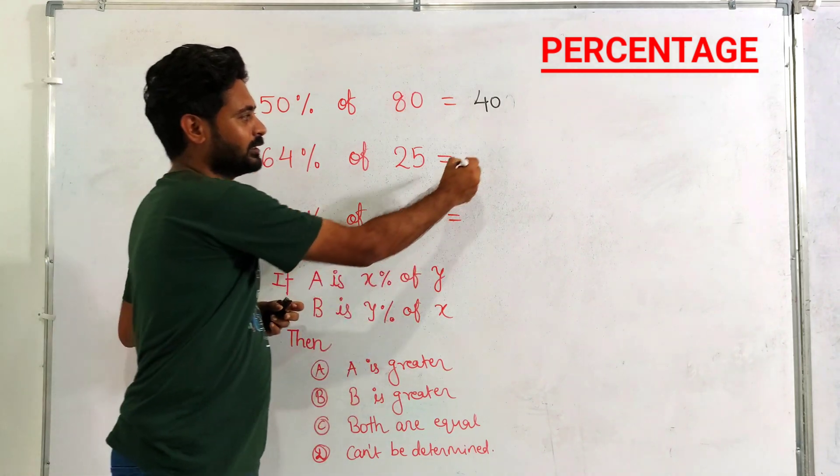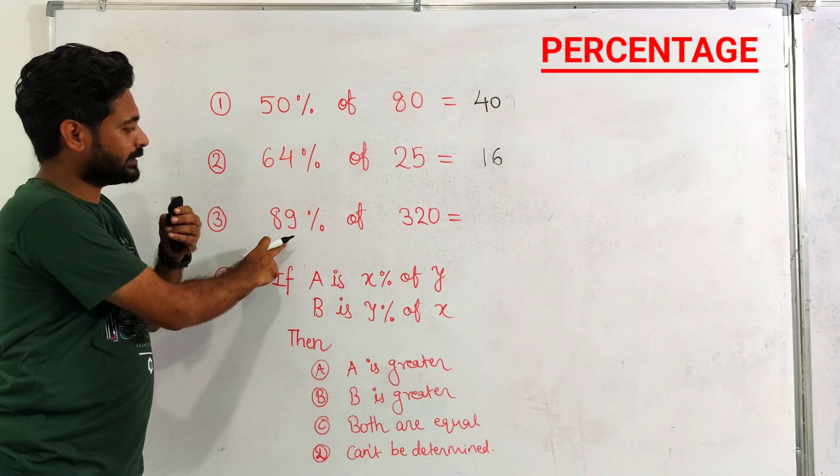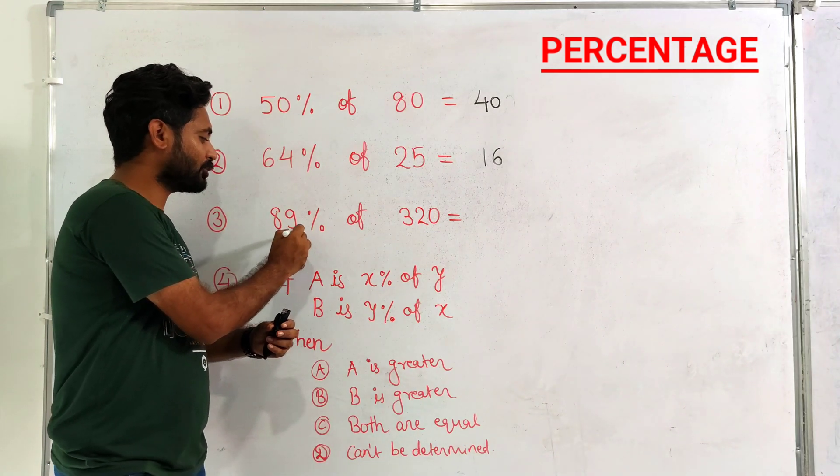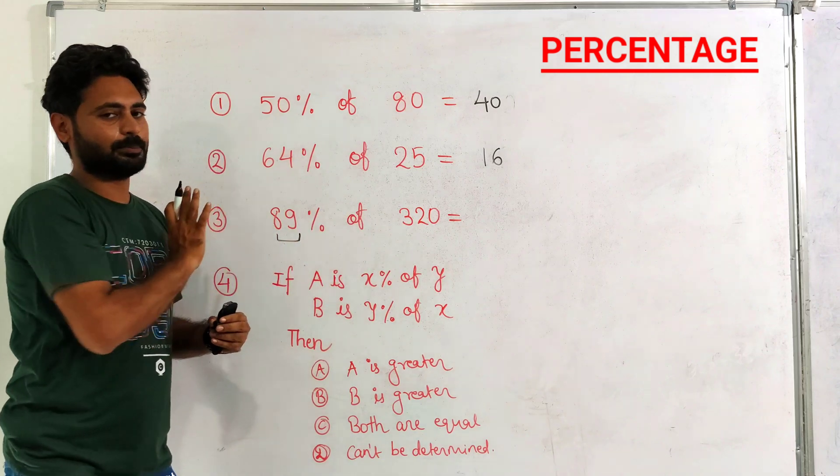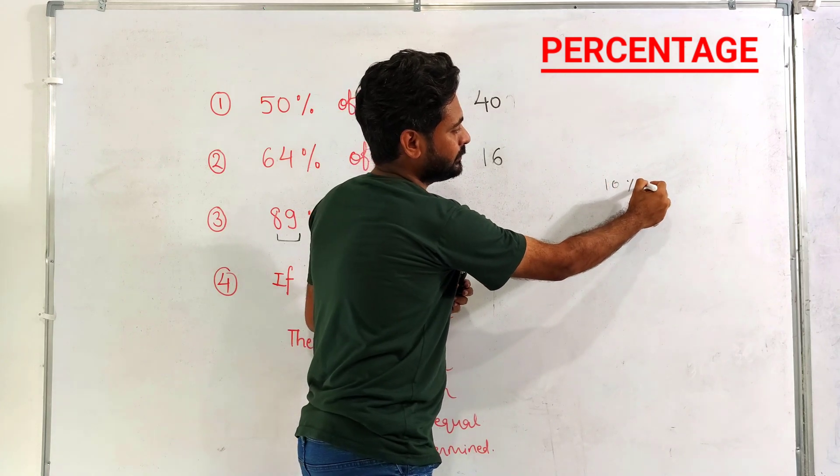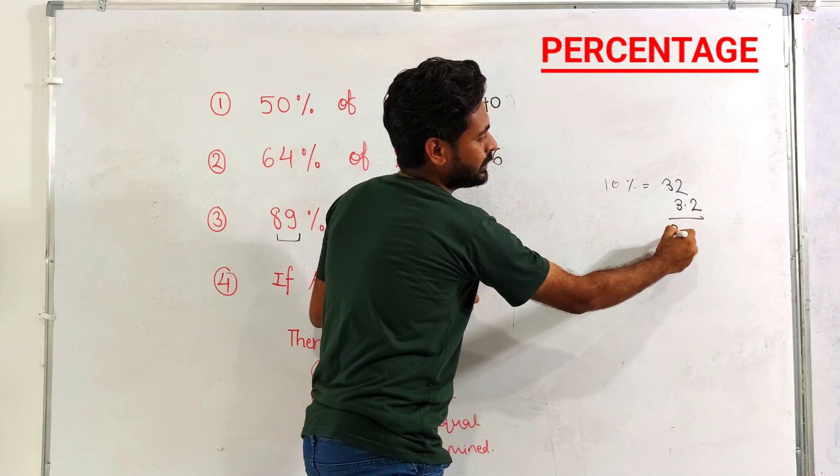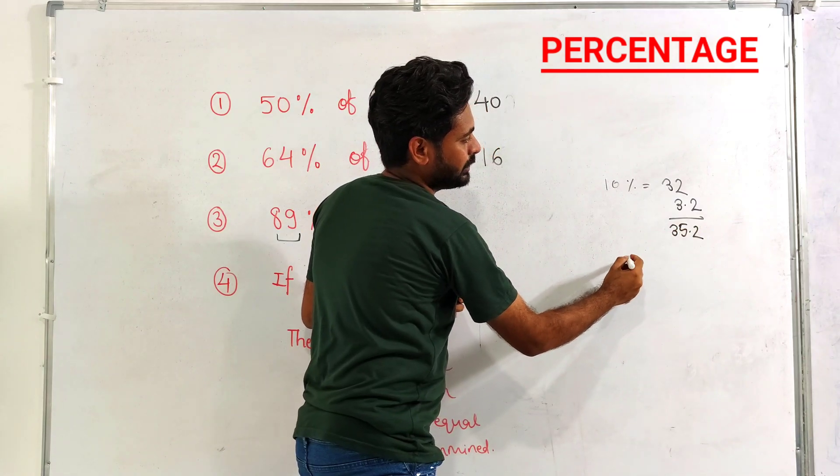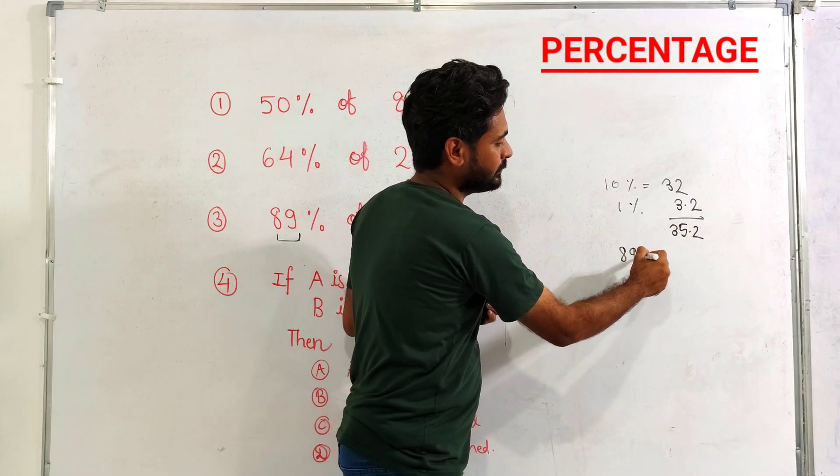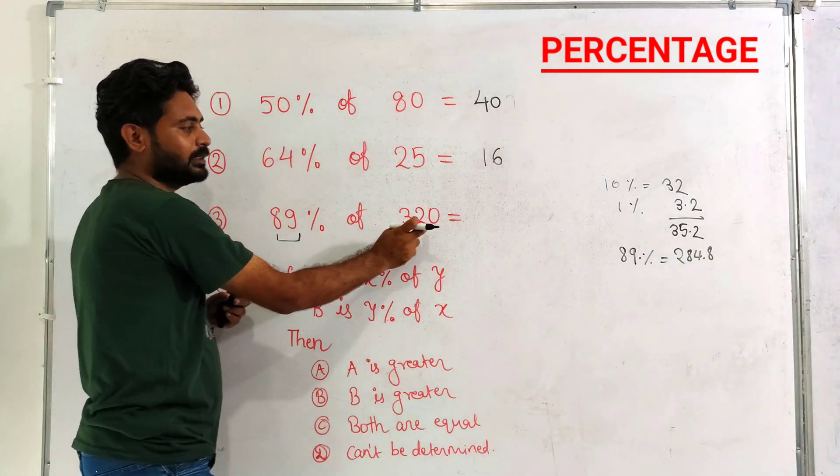Now we have another question: 89% of 320. 89% means if you subtract 11% from 320 you will get 89%. 11% - how can you attain? 10% of 320 is 32, 1% is 3.2, so 11% is 35.2. If 11% is 35.2, that means 89% is 284.8. Just subtract 35.2 from 320, so the answer is 284.8.